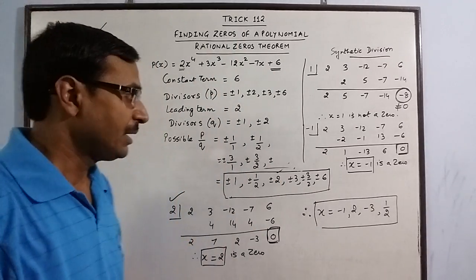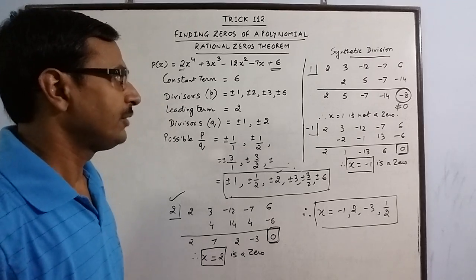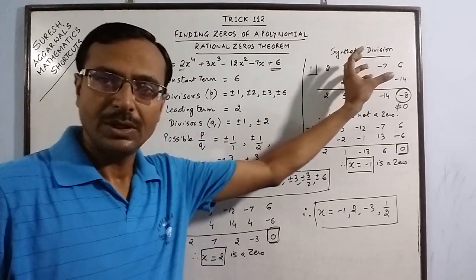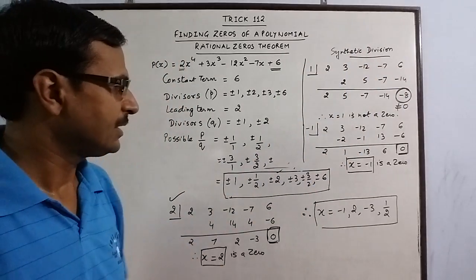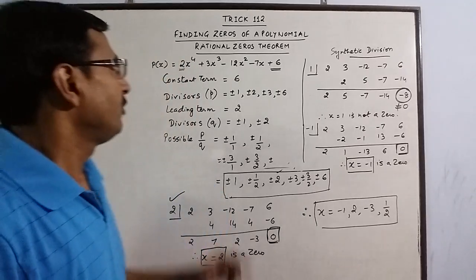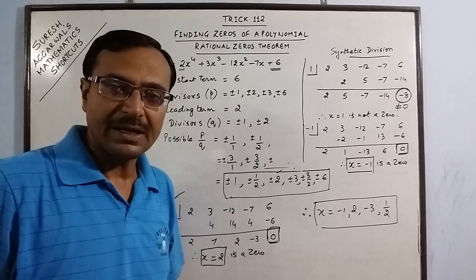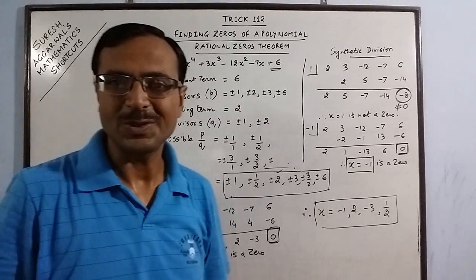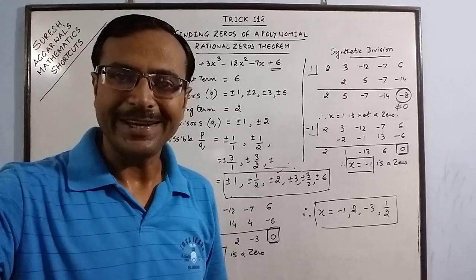For this method, you need to be well conversant with synthetic division. Each division should take only about 10 seconds, so even checking all six values can be done in one or two minutes. Solving this by hit and trial would consume at least three times as long. So keep learning and keep enjoying — share and subscribe the channel if you like it.